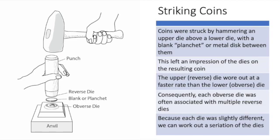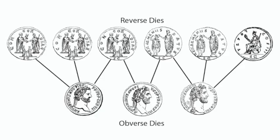Finally, another kind of seriation that comes from numismatics depends on the fact that most ancient and medieval coins were made by striking a disc of metal between two dies — an obverse die and a reverse die. Because the dies were engraved by hand, each die was slightly different, and the upper or reverse die usually wore out faster than the lower one, or broke altogether. As a result, each obverse die is often associated with several reverse dies, and some reverse dies are associated with more than one obverse. This provides the basis for working out a sequence of dies — a process numismatists call die linking. As with other forms of seriation, we don't know the direction of the order without recourse to other information, such as the emperor's titles and inscriptions on Roman coins.